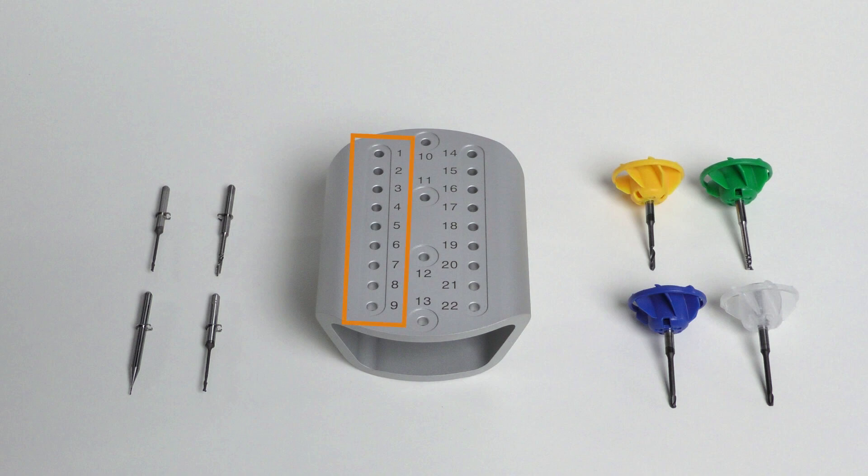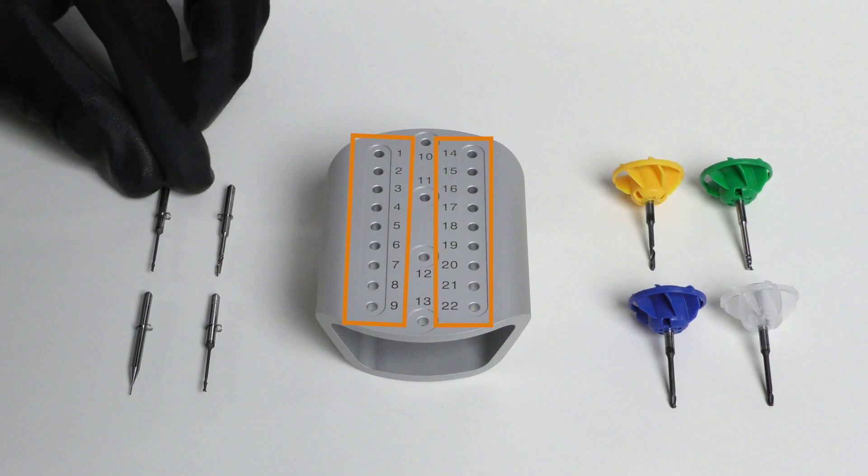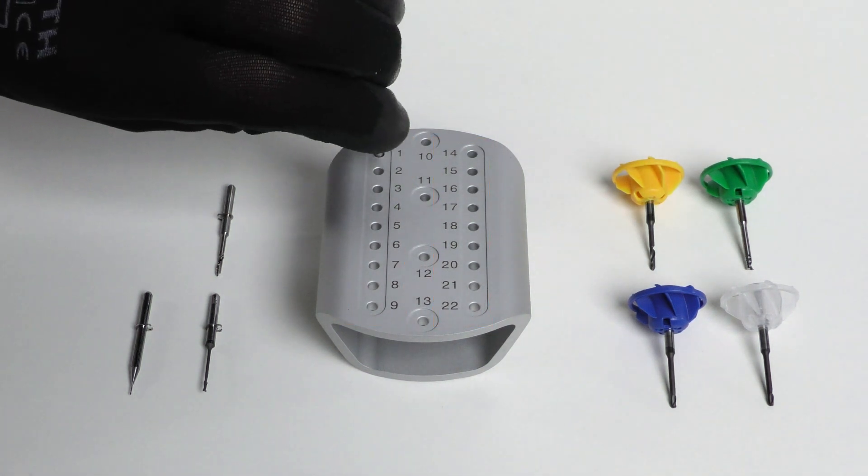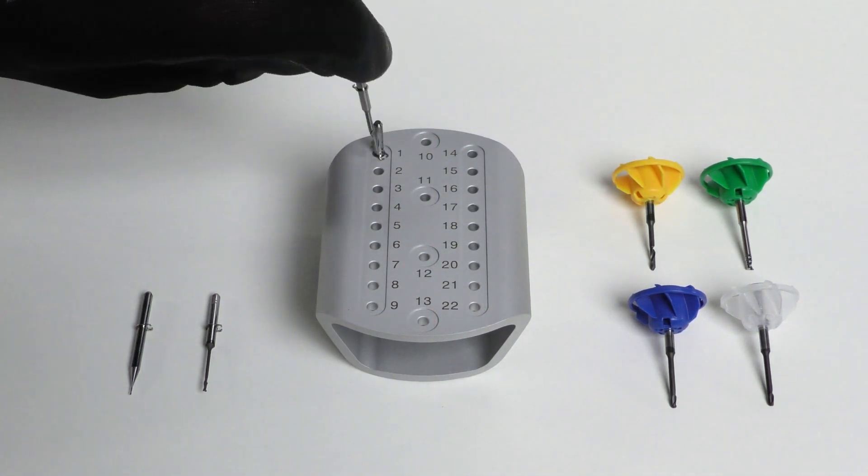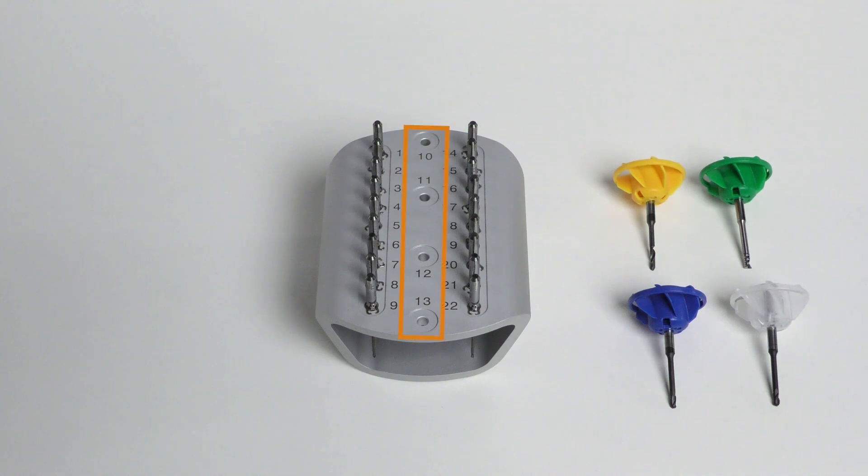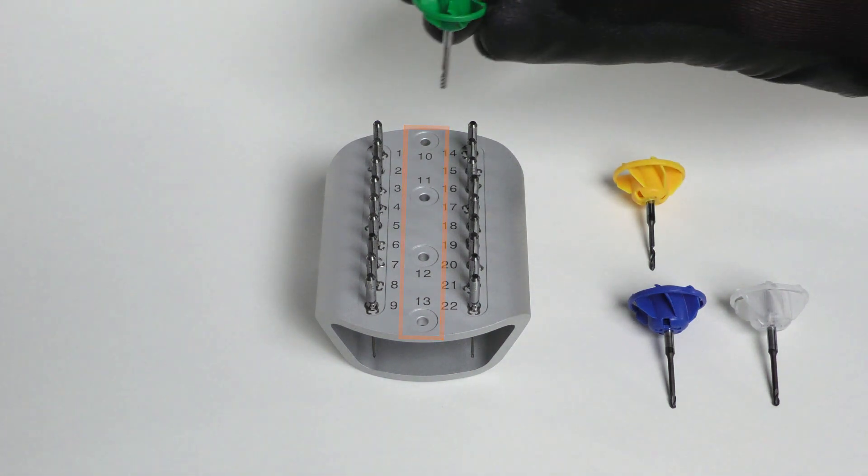Positions 1-9 and 14-22 can be used for conventional dental tools with stop rings which are suitable for your machine. Positions 10-13 are suitable for one air tool each.